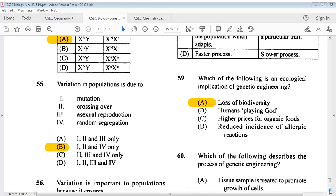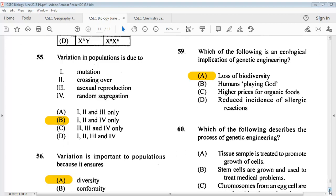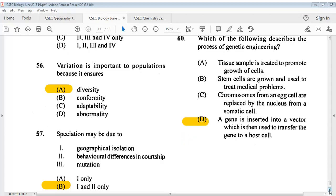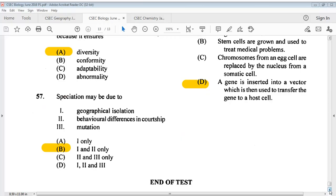Question 55, variation in populations is due to? Our answer is B, 1, 2 and 4 only. Question 56, variation is important to populations because it ensures. The answer is A, diversity. The answer for 57 is B, 1 and 2 only.